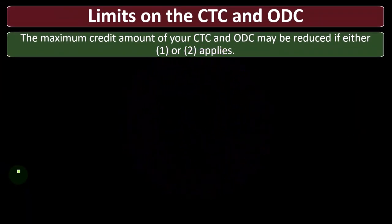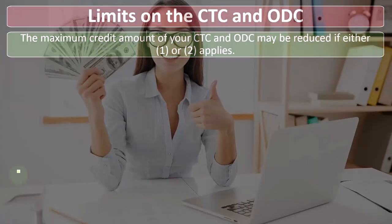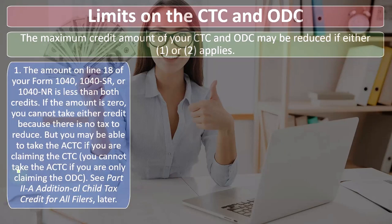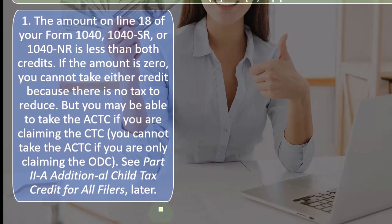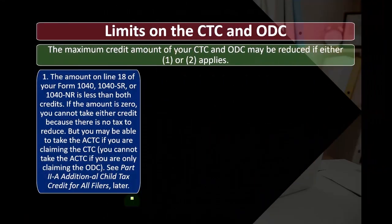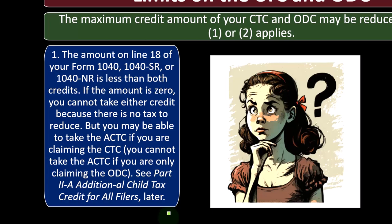Limits on the CTC child tax credit and ODC other dependent credit: the maximum credit amount may be reduced if either of two conditions apply. Condition one: the amount on line 18 of Form 1040, 1040-SR, or 1040-NR is less than both credits — if the amount is zero, you cannot take either credit because there's no tax to reduce. However, you may be able to take the ACTC additional child tax credit if you are claiming the CTC child tax credit. You cannot take the ACTC if you are only claiming the ODC. This relates to the refundable and non-refundable portions — normally you can't get credits that take your tax liability below zero.